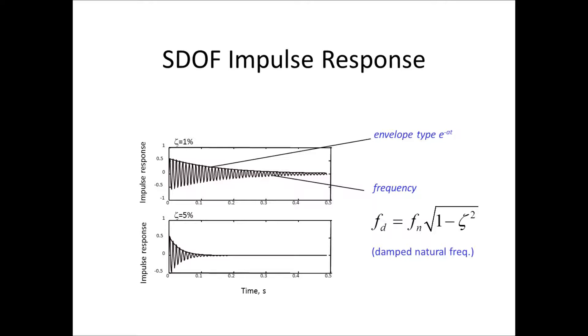The frequency of the oscillation, oscillating part, is not the natural frequency, but something we call the damped natural frequency, which is the undamped natural frequency times the square root of 1 minus zeta squared. So, slightly lower, slightly smaller than the natural frequency. Although for regular zeta numbers, it's a very small difference.